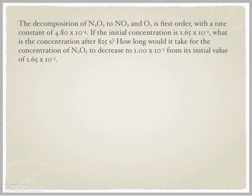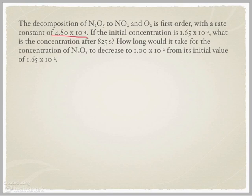Here's your first example: the decomposition of N₂O₅ into NO₂ and O₂. It's a first-order reaction, so there are no coefficients or exponents — it's always one to one. The rate constant K is 4.8×10⁻⁴. They give you an initial concentration of 1.65×10⁻², and they want to know what the concentration will be after 825 seconds. There are actually two separate questions here.